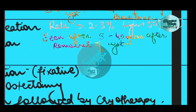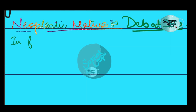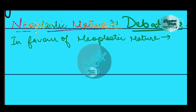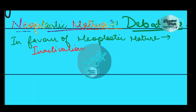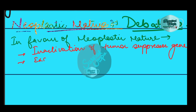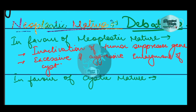The neoplastic nature of OKC has been debated for a long time. Due to the high recurrence rate, late detection when the cyst has grown very large, and inactivation of the tumor suppressor gene, some have classified OKC as a benign neoplasm. However, the evidence against neoplastic classification is that it responds very well to marsupialization.